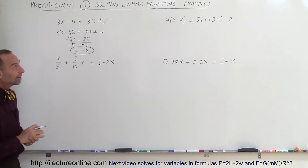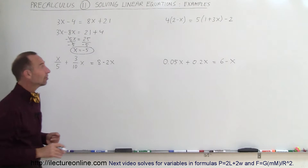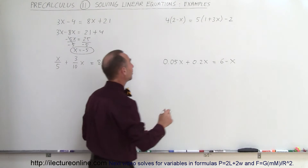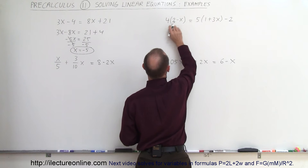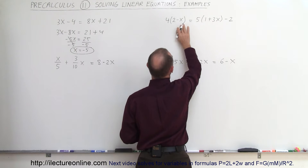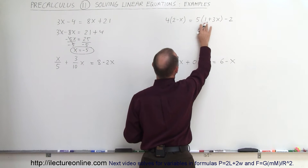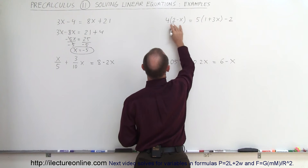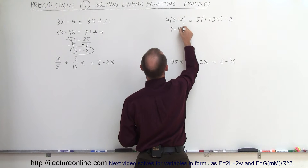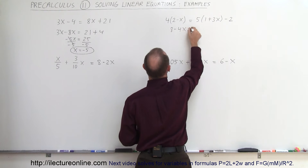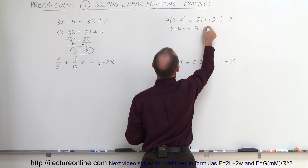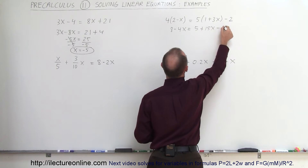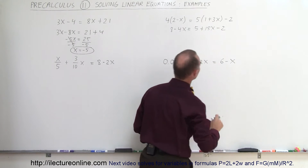On the second example we first have to get rid of the parentheses. We distribute the 4 to the 2 and the minus x, and the 5 to the 1 and the 3x. So this becomes 4 times 2 which is 8, minus 4x, is equal to 5 plus 15x minus 2.